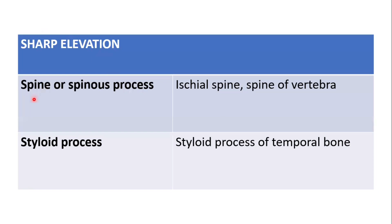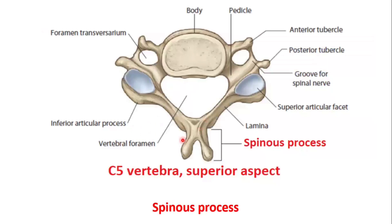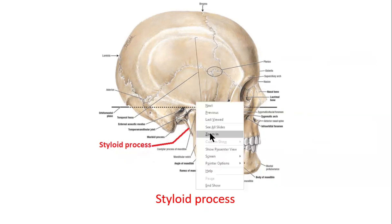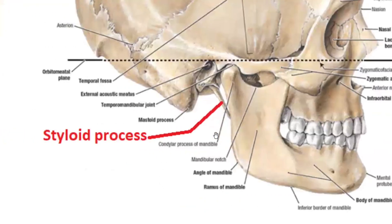The sharp elevation is the spine — the spinous process, the ischial spine, and the spine of the vertebra are examples. Also the styloid process of the temporal bone. Here you could see a C5 typical vertebra, superior aspect, with the spinous process labeled — in the cervical vertebra it is bifid. And this is the styloid process of the temporal bone, projecting downwards.